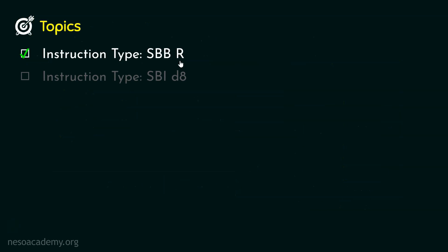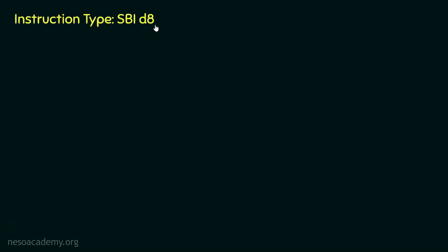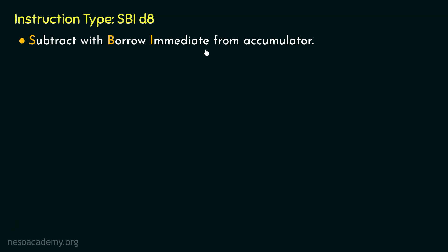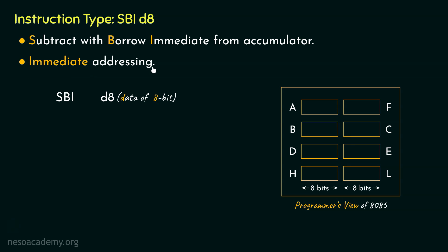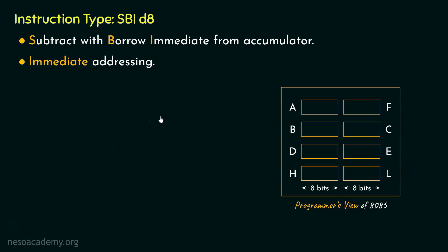Let's now learn about the instruction type SBID8. SBID8 stands for subtract with borrow immediate from accumulator. One operand resides inside the accumulator and the other operand is sent as 8-bit data via the instruction itself. Since the data is being sent via the instruction, it falls under the immediate addressing mode. The mnemonic SBI requires 8 bits and we send an additional 8 bits of data, so this instruction falls under the 2-byte long instructions category.